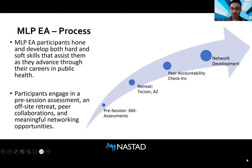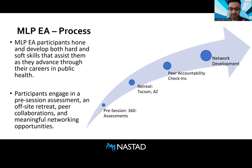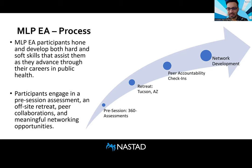When we look at the process for MLP this year, it really is going to involve four main pillars. Participants are going to be honing and developing both hard and soft skills that assist them as they advance through their careers in public health and leadership. The first will be the pre-session 360 assessment — unchanged from our previous MLP. This will give everyone an idea of their leadership impact and their baseline, and will help them understand how this retreat is going to help them expand into new versions of senior leadership.